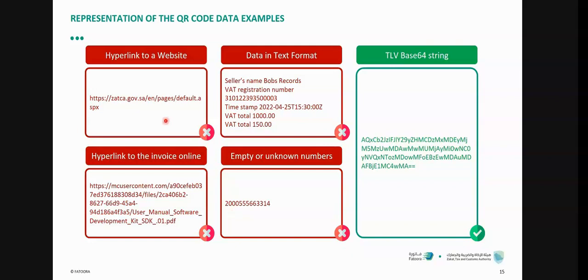For example, one of the wrong representations is to embed a hyperlink to a website or to a menu or to a form, which is a wrong representation or wrong data to be embedded in the QR code.